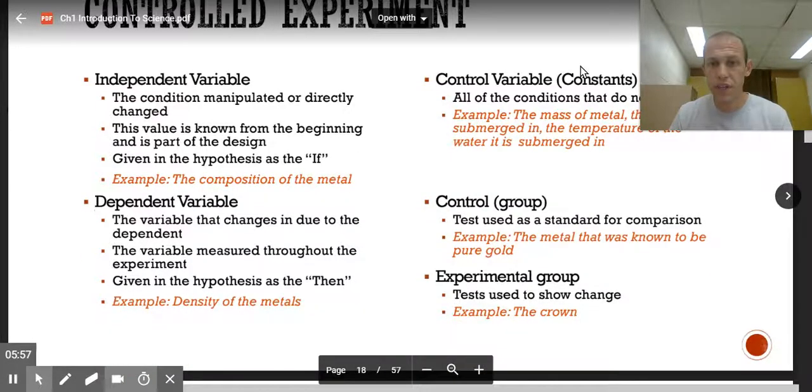The control group is the thing that you're testing against. It's the standard that you're comparing things to. So the metal that was known to be pure gold is the control group. We know this. That's our thing we're going to test against. And then the experimental group, that is what we're testing to see if there's a change. That's the crown. That's the experiment.